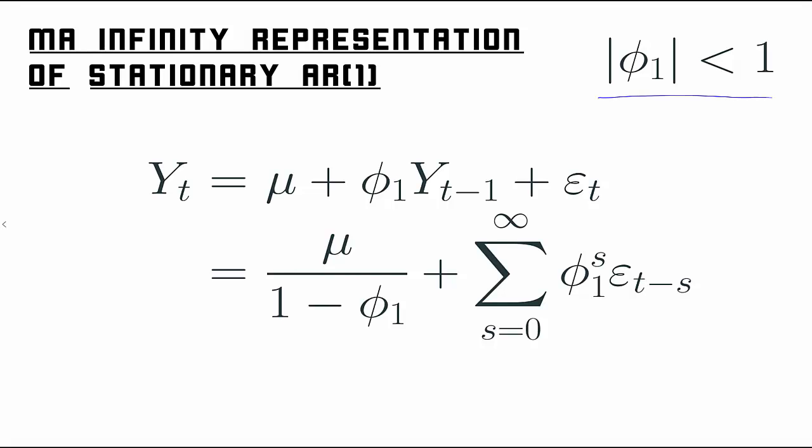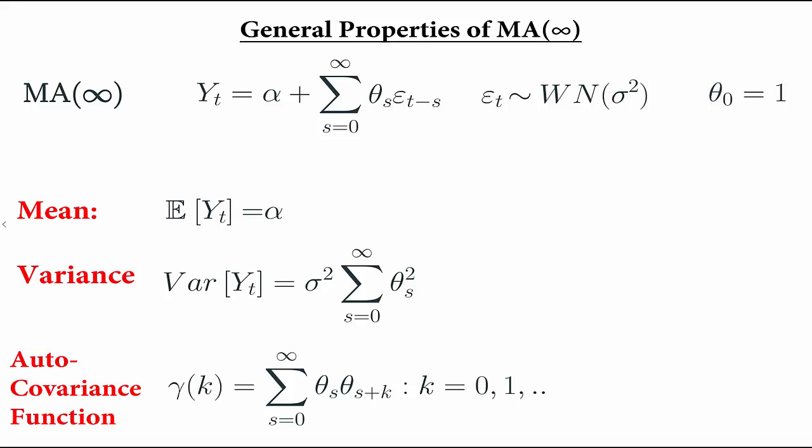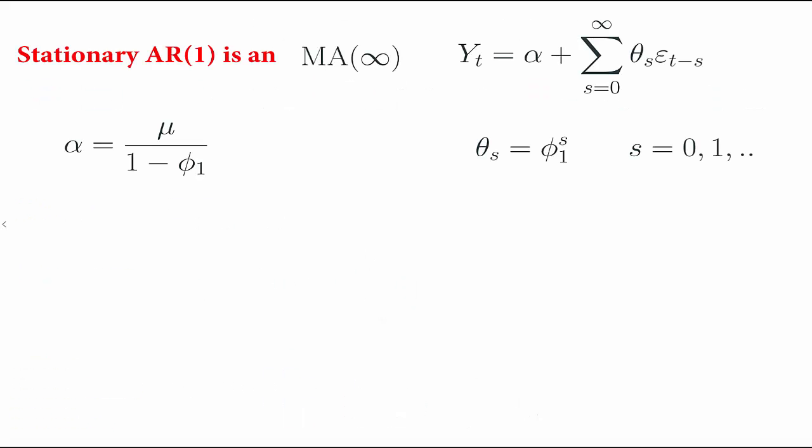We can now state the general properties of an MA infinity. Given its definition with coefficients alpha and the thetas, we get a different mean, variance, and covariance for different coefficients, which can be derived using the formulas below. The AR1 is an MA infinity where alpha equals mu/(1 − φ1) and all the theta coefficients are just φ1 to the power s, as seen from the MA infinity representation we derived. We can now use the general MA infinity formulas, plugging in these particular coefficients found for the AR1.